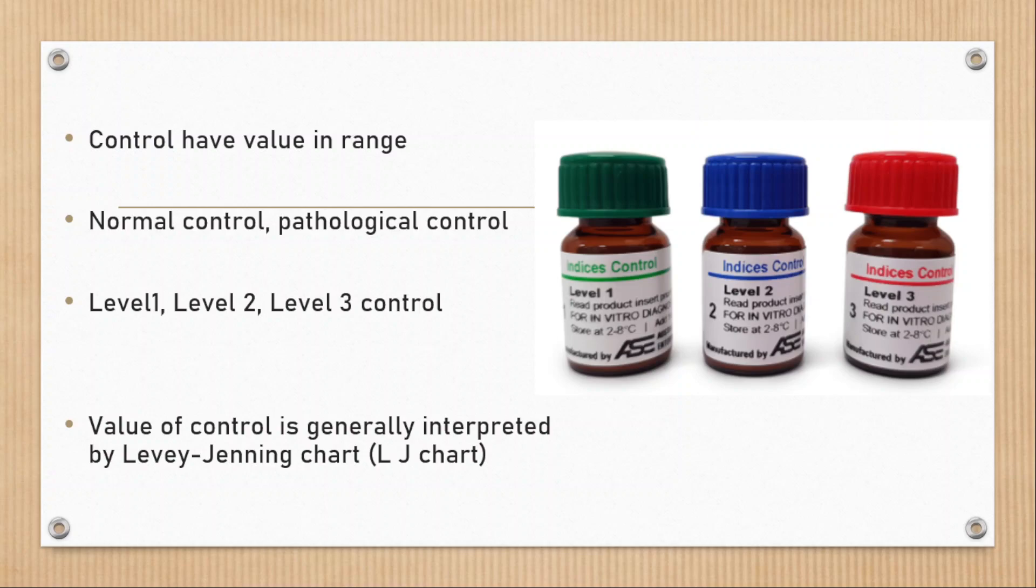And over a period of time, the result of control can be interpreted by Levy-Jennings chart to know whether they are going good or not.